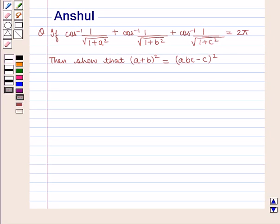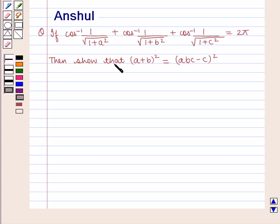Hello and welcome to the session. In this session we are going to discuss the following question: If cos inverse of 1 by square root of 1 plus a square, plus cos inverse of 1 by square root of 1 plus b square, plus cos inverse of 1 by square root of 1 plus c square is equal to 2π, then show that (a + b)² is equal to (abc − c)².